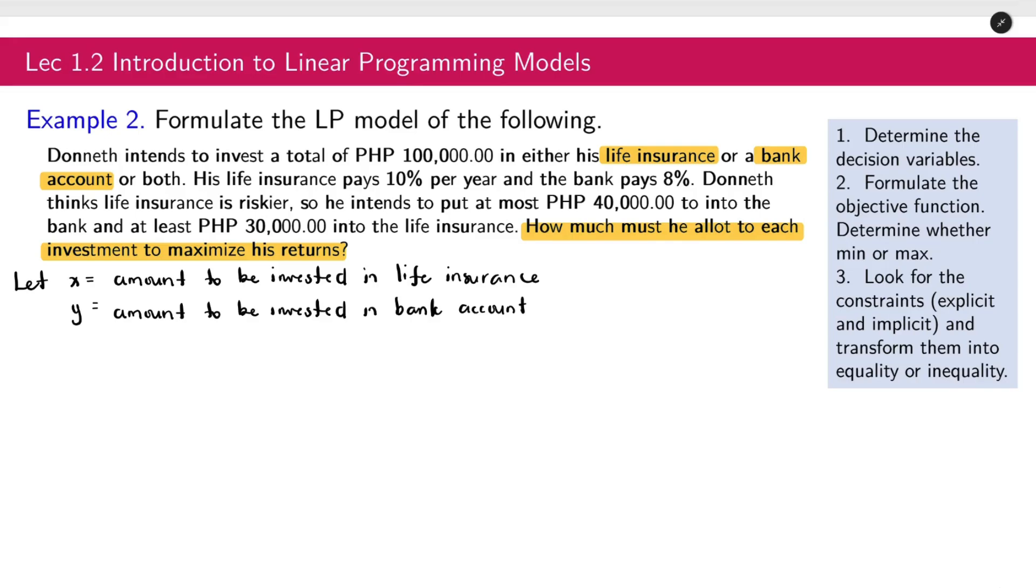Next, let us create the objective function. Take note that here we have maximize. So our objective function will be max Z. And then it will consist of x plus y again. Now, what will we put as their coefficients? Take note that we are talking about the returns when you invest something. When we invest, there is interest coming in.